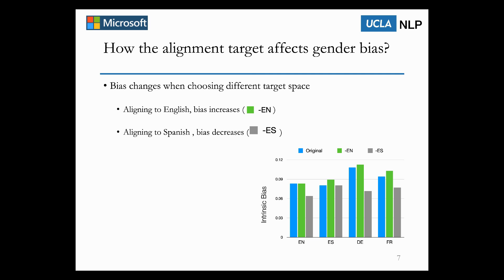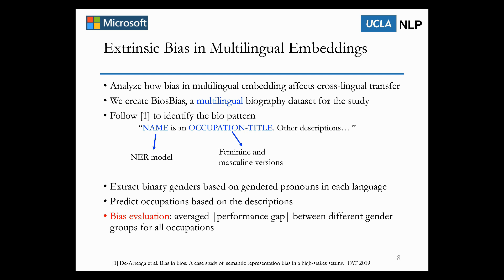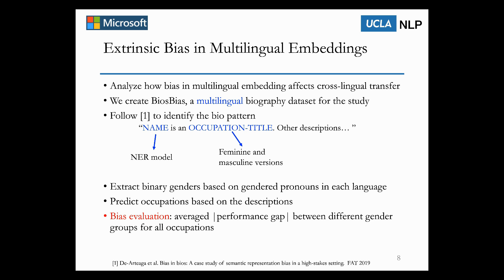Next, let's discuss the extrinsic bias. In this part, we study how the bias in multilingual embeddings affects downstream tasks. To conduct extrinsic bias analysis, we create a multilingual bias dataset following the 2019 paper — first extracting biographies from Wikipedia based on the pattern 'a name is an occupation,' and then extracting binary genders based on gendered pronouns in each language. We use occupation prediction as the evaluation task, and use the average performance gap between different gender groups across all occupations as the extrinsic bias evaluation metric.